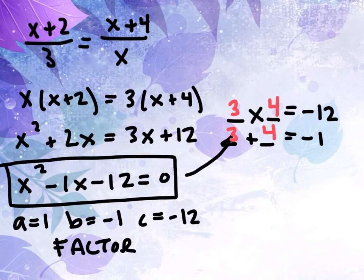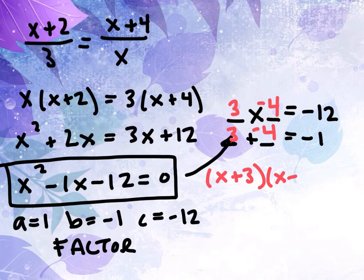So, a 3 and a 4. To make this work, the 4 would be the negative. So we would have x plus 3 and x minus 4 equaling 0.